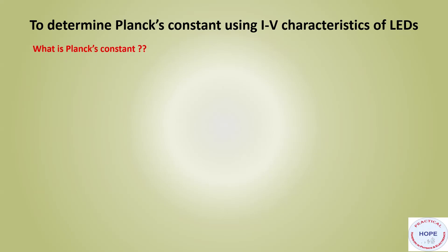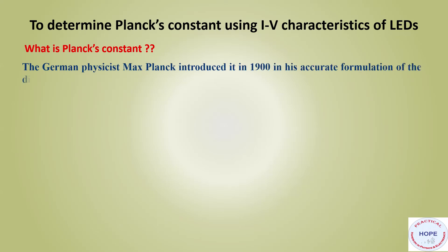First, what is Planck's constant? The German physicist Max Planck introduced it in 1900 in his accurate formulation of the distribution of the radiation emitted by a black body.